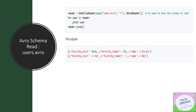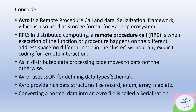Now for the interesting part: we wrote the file and supplied a schema, which is now stored within the file. When we try to read the Avro file, we don't need to know or supply any schema beforehand, because it is already stored within the file. We can simply use the library to read the data and get the output — the different fields, attributes, and metadata are auto-read because the schema file is already embedded in the physical structure of Avro.